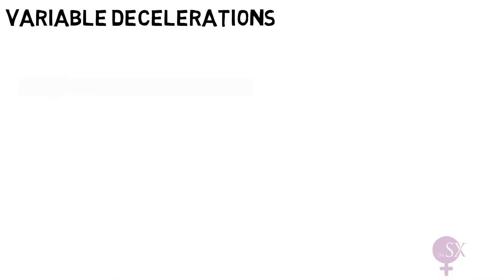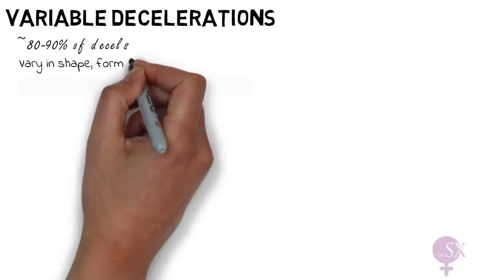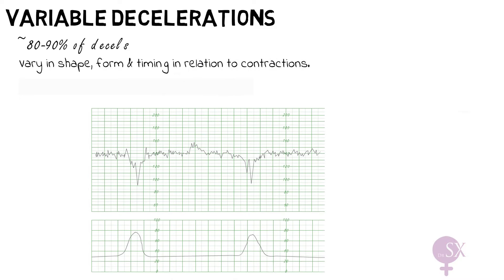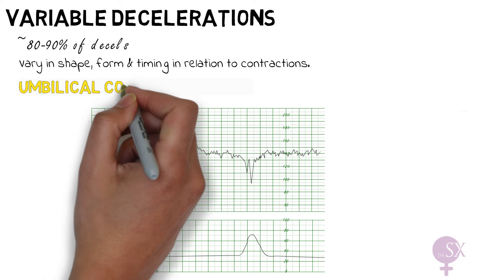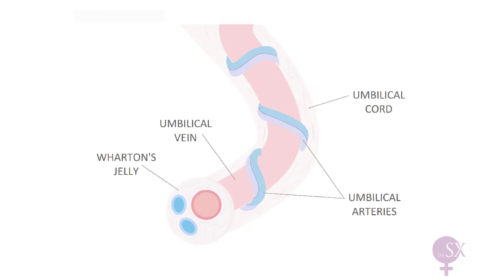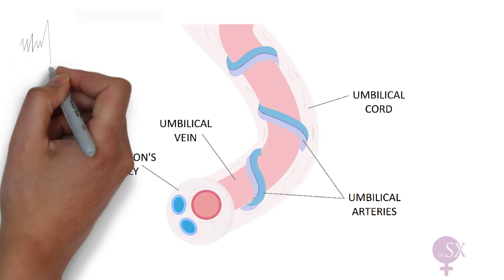Next, we have variable decelerations, which are the most common type of deceleration. They are termed variable as they vary in their shape, form, and timing in relation to contractions. They typically have a rapid fall in baseline heart rate with a variable recovery phase. Variable decelerations are usually caused by umbilical cord compression. Let's take a deeper look into what happens and how this relates to the findings we see on the CTG.